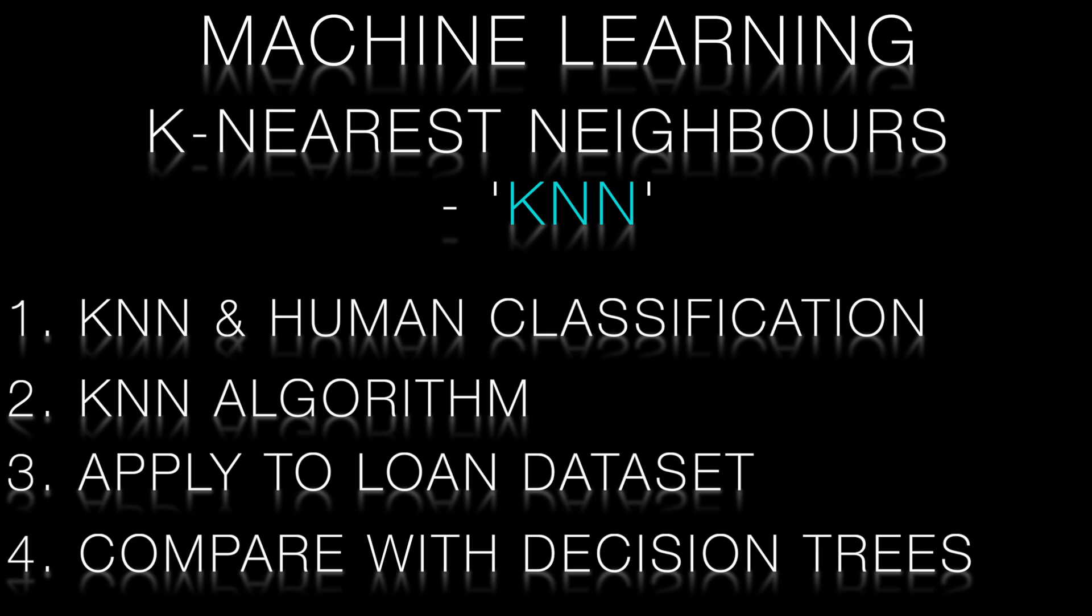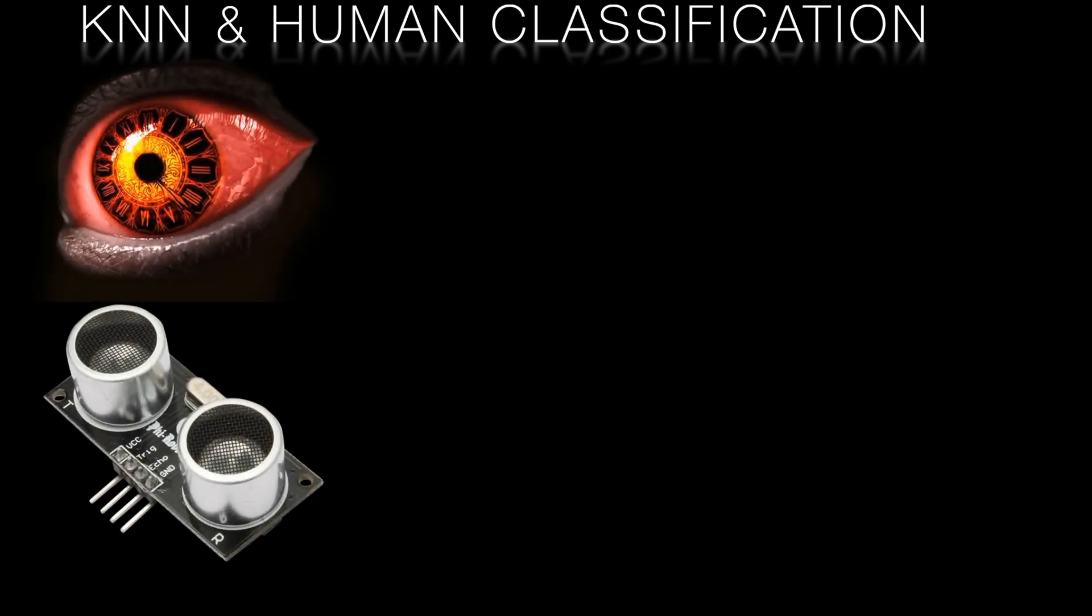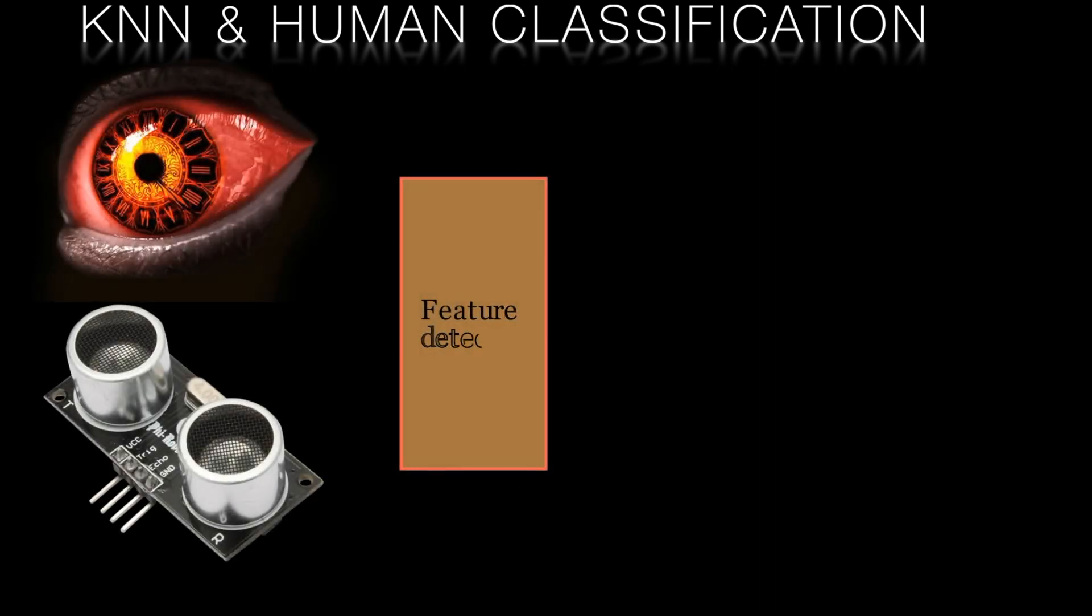KNN is based on a very simplified view of how humans discriminate and classify. Let's formalize this. We start with feature detectors. These could be our biological senses or sensors that we have built.